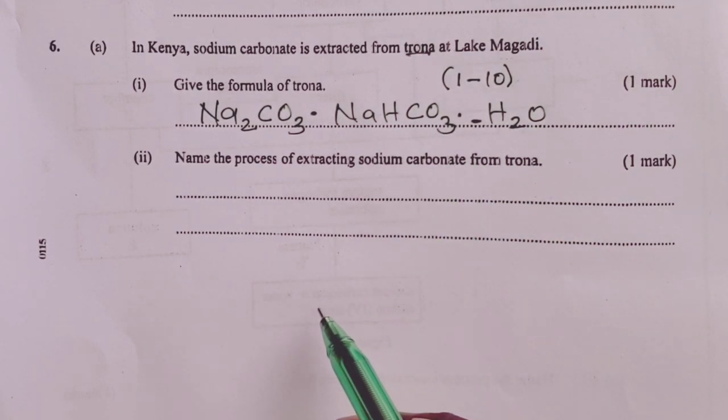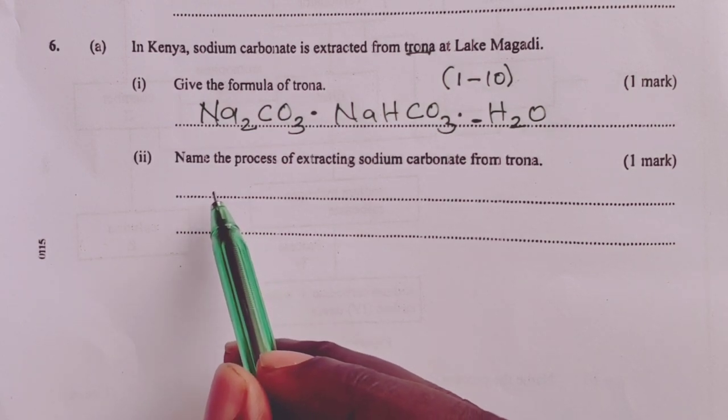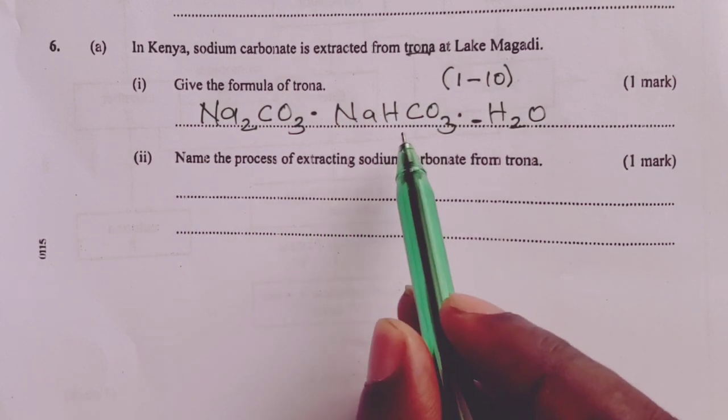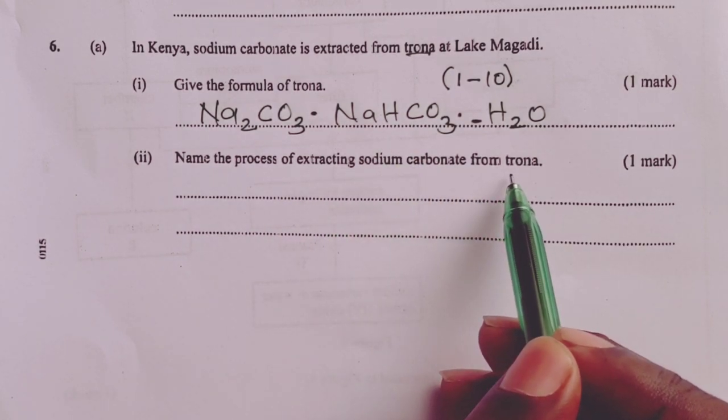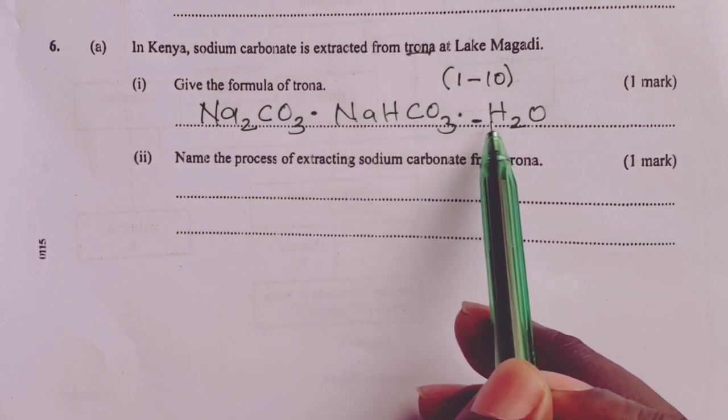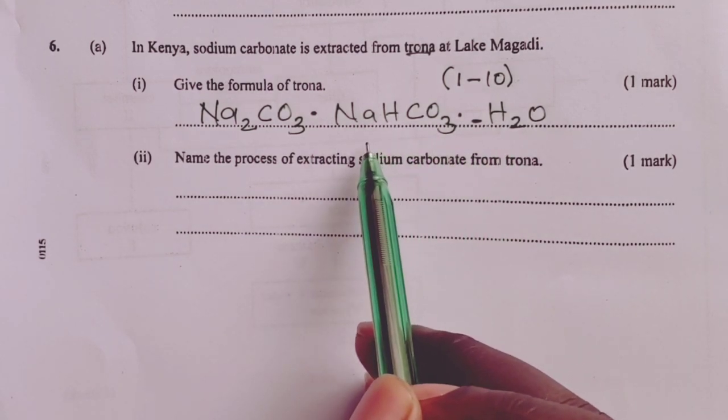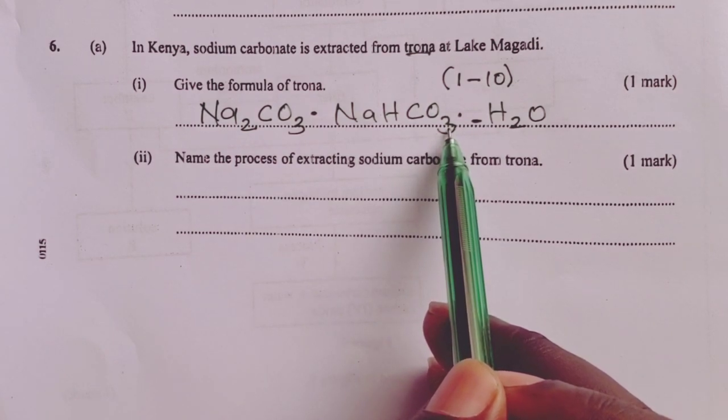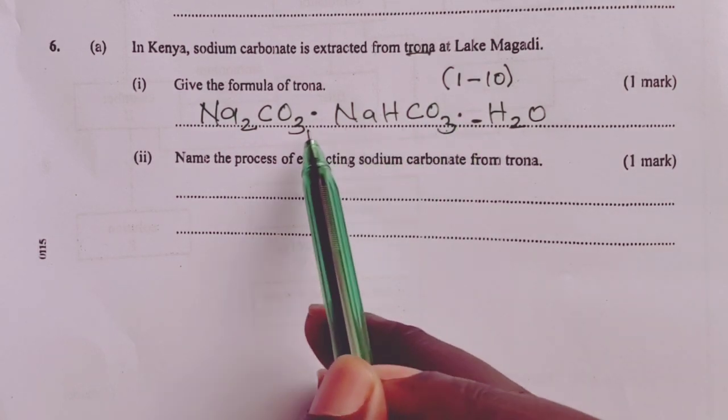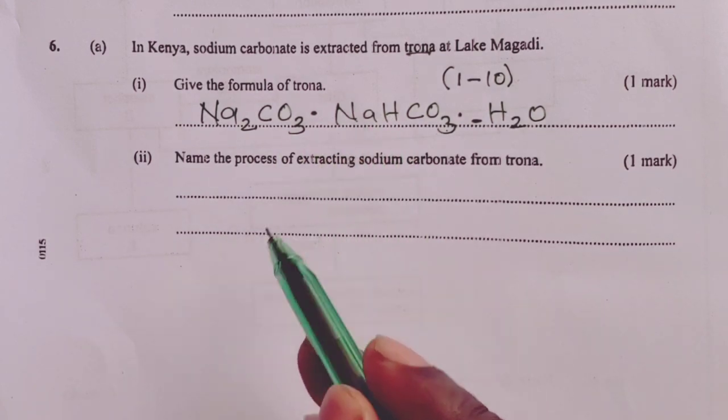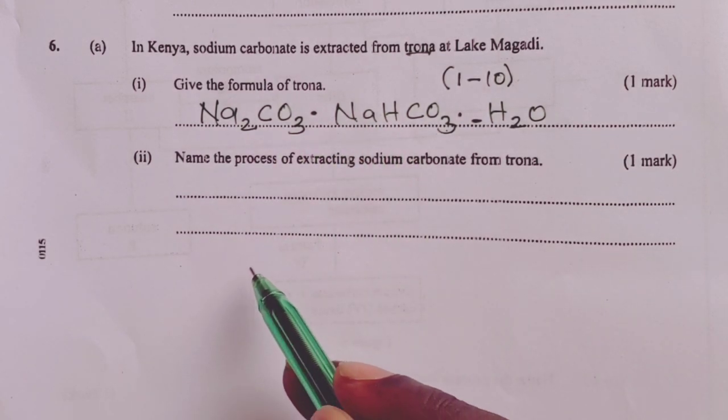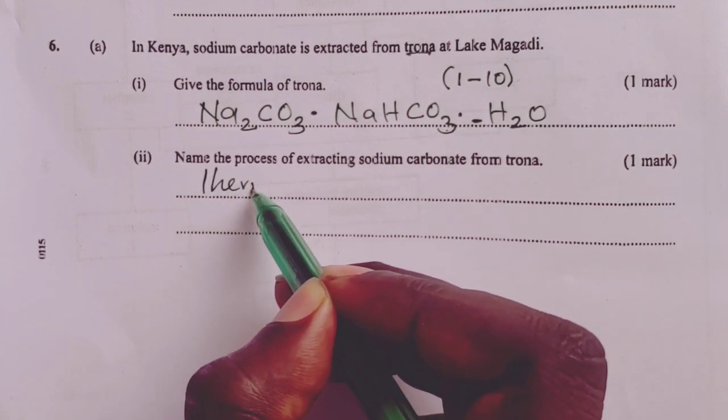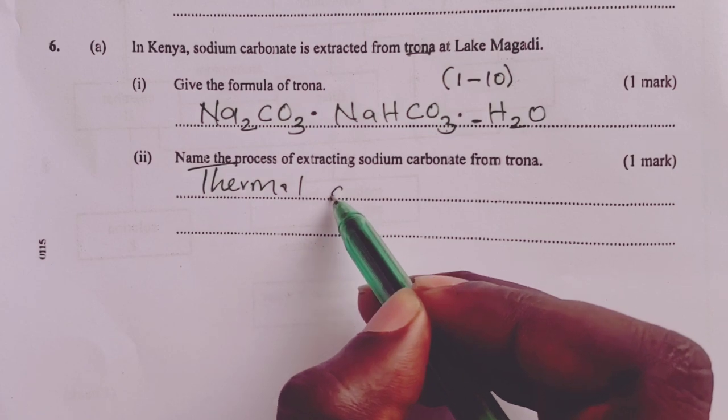Part B, we were asked to name the process of extracting sodium carbonate from the salt whose formula we have just written in part 1 here. We obtained sodium carbonate from this double salt through heating. So chemically, the process would be called thermal decomposition.